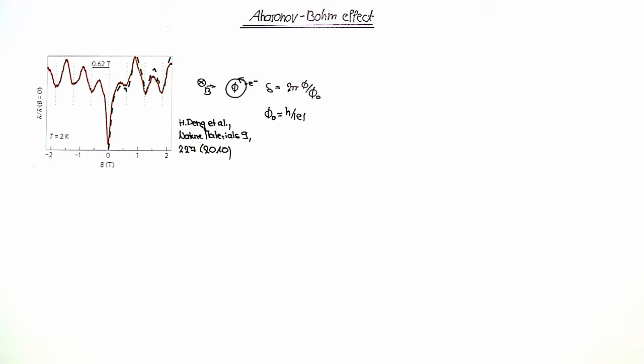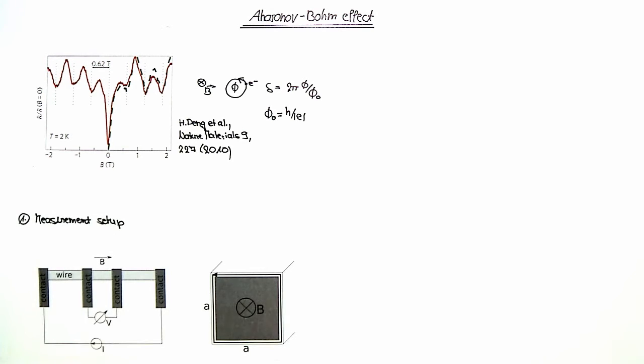So the measurement setup looks as follows. The wire, which you can see here, is electrically contacted with 4 ohmic contacts. So the resistance can now directly be obtained from the voltage drop V and the current I through the system. In the sketch of the wire cross section, which you can see here, one can see that the magnetic field B is applied parallel to the wire axis.